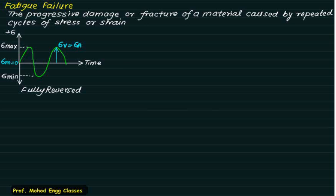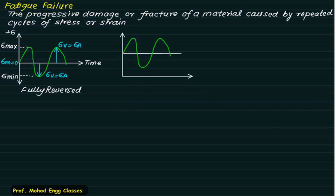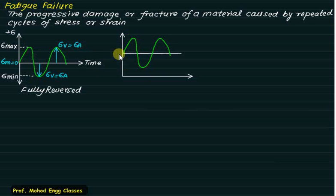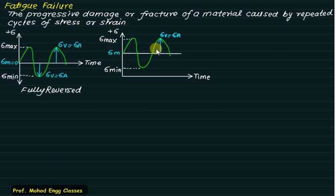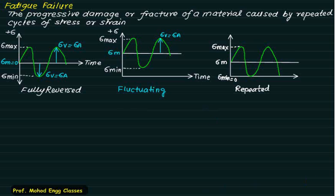The second type is called fluctuating stress, where the stress remains on the same side — either both tension or both compression, so the sign does not change. Here sigma mean is the average of sigma max and sigma minimum, and sigma amplitude is the difference. Both values are positive in this case.